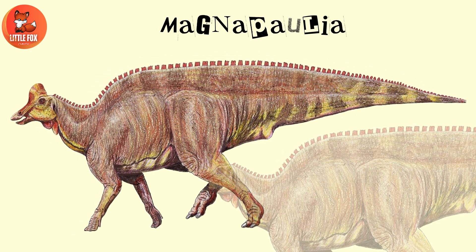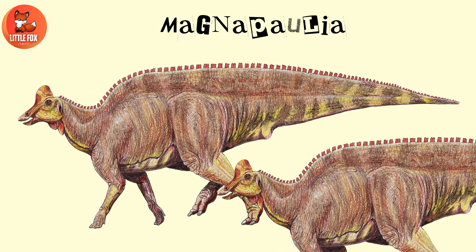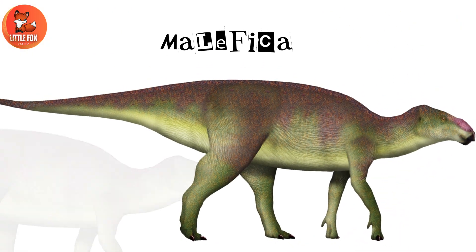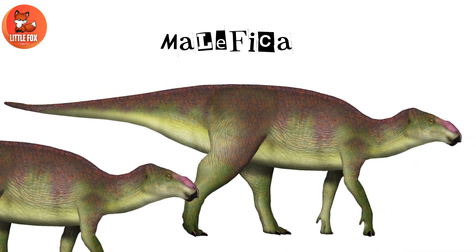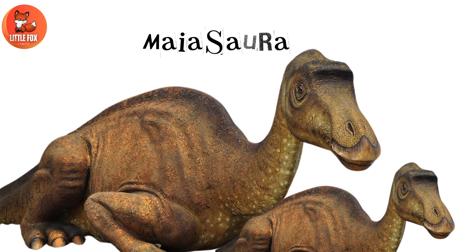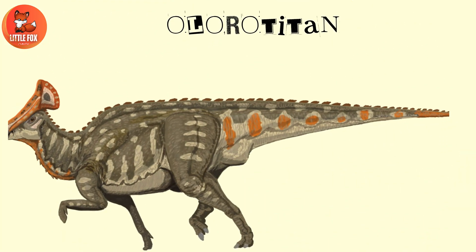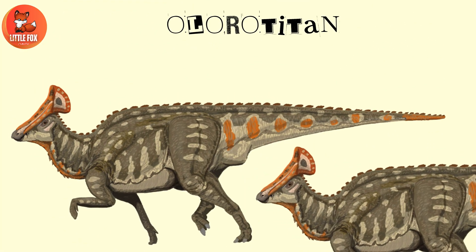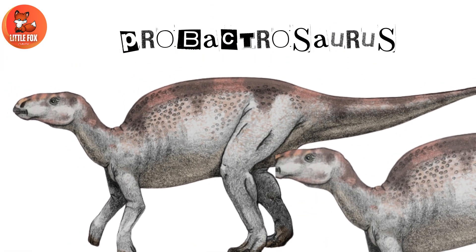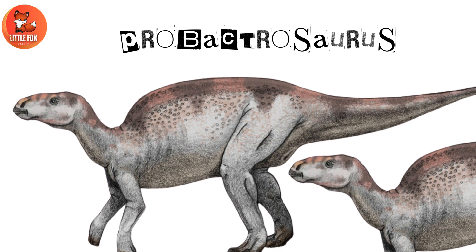Number 26. Magnapolia. Number 27. Male fica. Number 28. Myasauora. Number 29. Olerotitan. Number 30. Probactrosaurus.